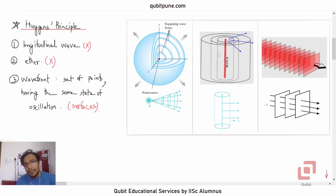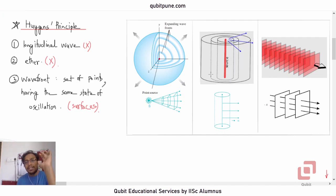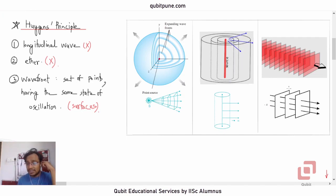If you consider wavefronts emitted by either a point source or a line source at a location very far from the origin of the wavefronts, then we may take some portion of them and treat them as planar wavefronts.